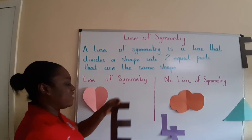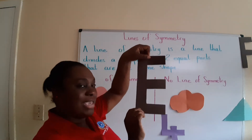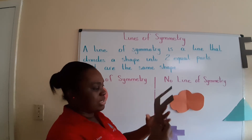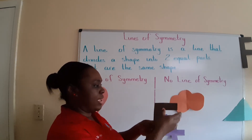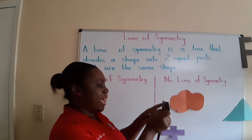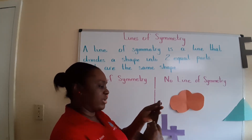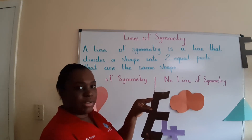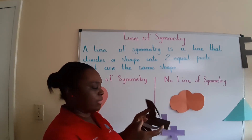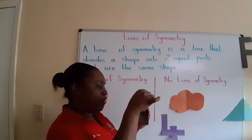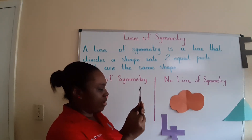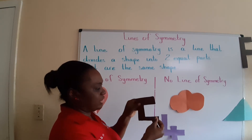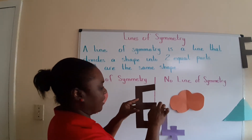Let's look at the letter E. If I fold it this way, I don't find a line of symmetry. Do you see any other way we can fold it? Let me try it this way — wow, perfect! There's a line of symmetry.